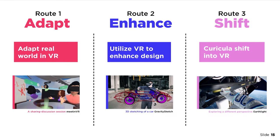For example, the design of VR experiences blurs the lines between architecture, interior design, product design, and interaction design. Courses in this area are primarily immersed in virtual environments. The approach by the SHIFT route can be summed up as designing with VR for VR, and extends into the exploration of speculative possibilities VR can offer.